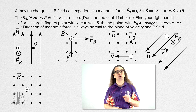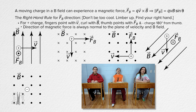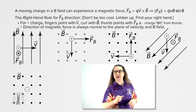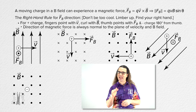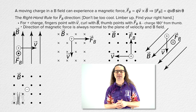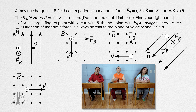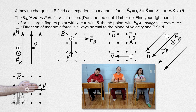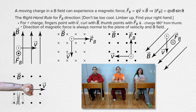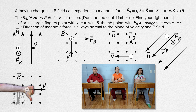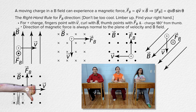Next, we have a negative charge in a uniform magnetic field which is out of the screen. Without a velocity, there is no magnetic force acting on this negative electric charge. So let's have the negative electric charge be moving to the right. Point our fingers to the right in the direction of the velocity, curl our fingers out of the screen with the magnetic field, and our thumb points down — the direction of the magnetic force acting on a positive charge. However, this is a negative charge, so the magnetic force is 180 degrees from that, or up.